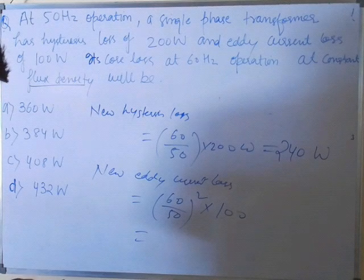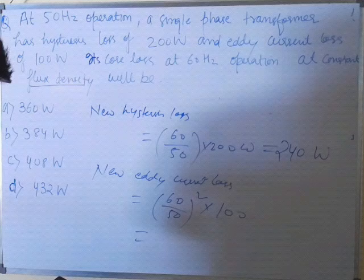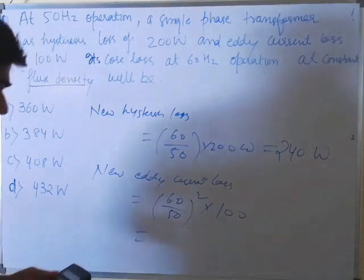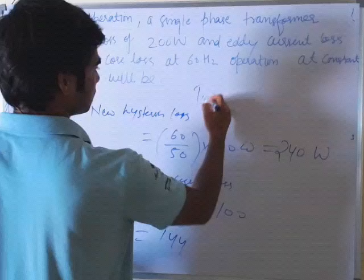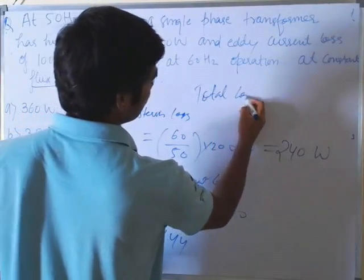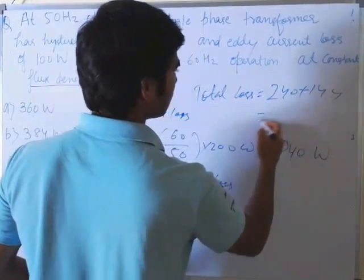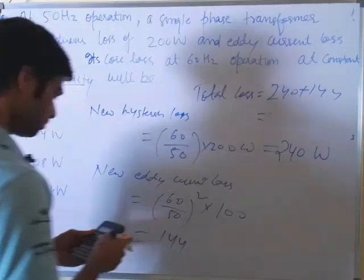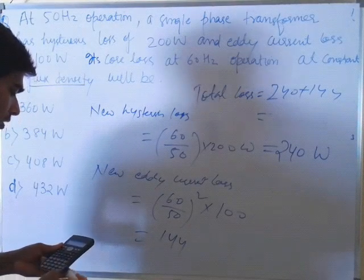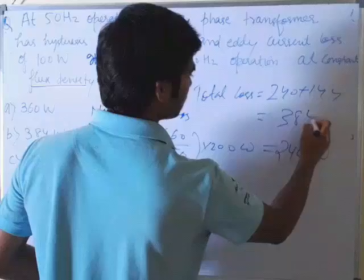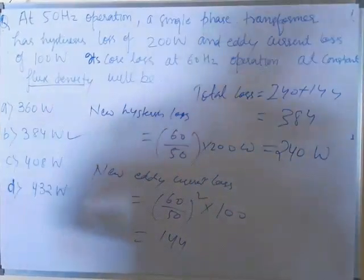The new eddy current loss is (60 ÷ 50)² × 100, which equals 144 watt. The total core loss is 240 plus 144, which equals 384 watt. So the answer is option B.